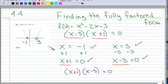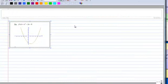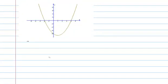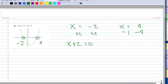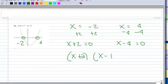Let's try it with another example, and let's try it without actually factoring. Here is x squared minus 2x minus 8. We have an x-intercept at negative 2 and an x-intercept at 4 — I'm reading these from the graph. So I have x equals negative 2, add 2 to each side, I get x plus 2 equals 0. Take the other x-intercept, x equals 4, subtract 4 from each side, I get x minus 4 equals 0.